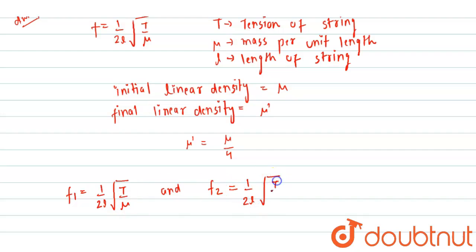fundamental frequency in second case, which is given as f2, which is equals to one upon two l, square root of t upon mu dash.